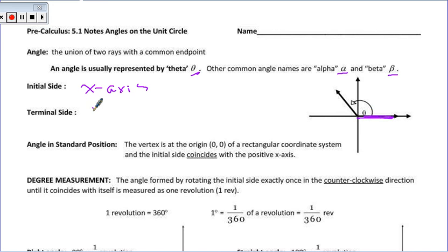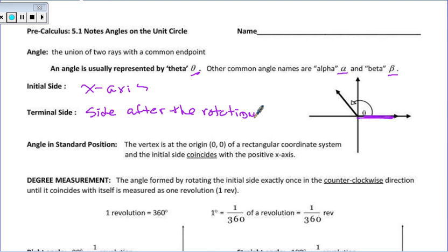The terminal side is the side after the rotation. When we talk about an angle in standard position, its vertex is going to be on the origin, and again it will start on the x-axis.